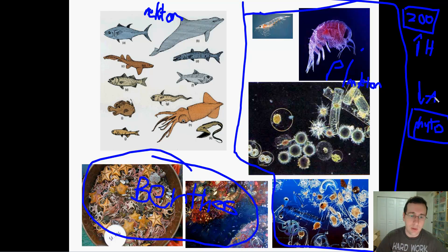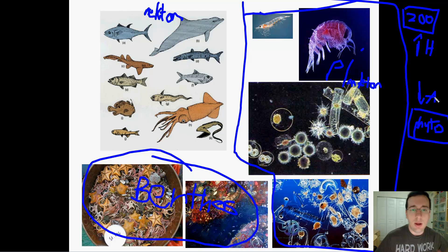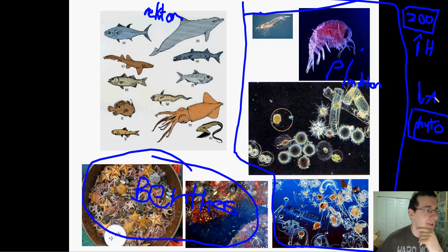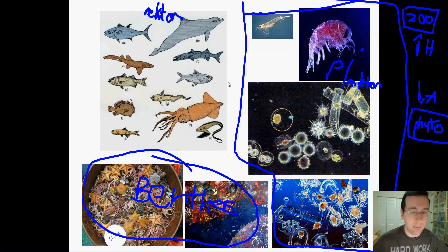So those are the three major categories: plankton, which are carried with the currents and don't swim freely; nekton, which choose where to go with or against currents; and benthos, which live and crawl on the bottom of the water.